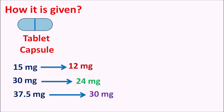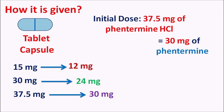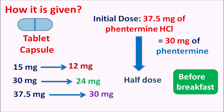The dose should be given at the lowest possible amount and is individualized based on the patient. Generally, the initial dose is 37.5 mg of Phentermine hydrochloride, which is equivalent to 30 mg of plain Phentermine. The dose may be reduced to half in patients with risk factors such as renal or hepatic dysfunction. This drug should be given one to two hours before breakfast to avoid gastrointestinal side effects and insomnia.